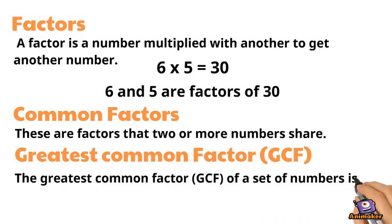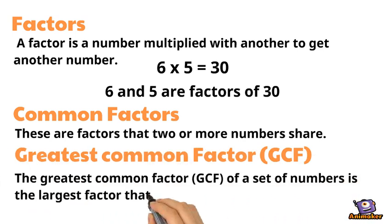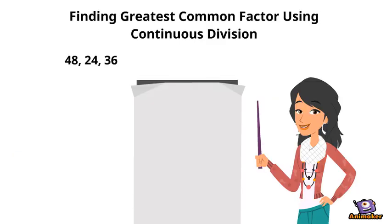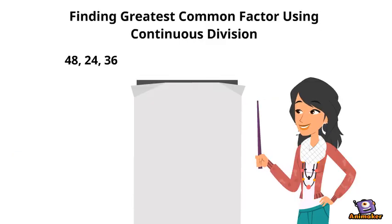The greatest common factor, or GCF, of a set of numbers is the largest factor that all the numbers share. We can find the greatest common factor using continuous division.